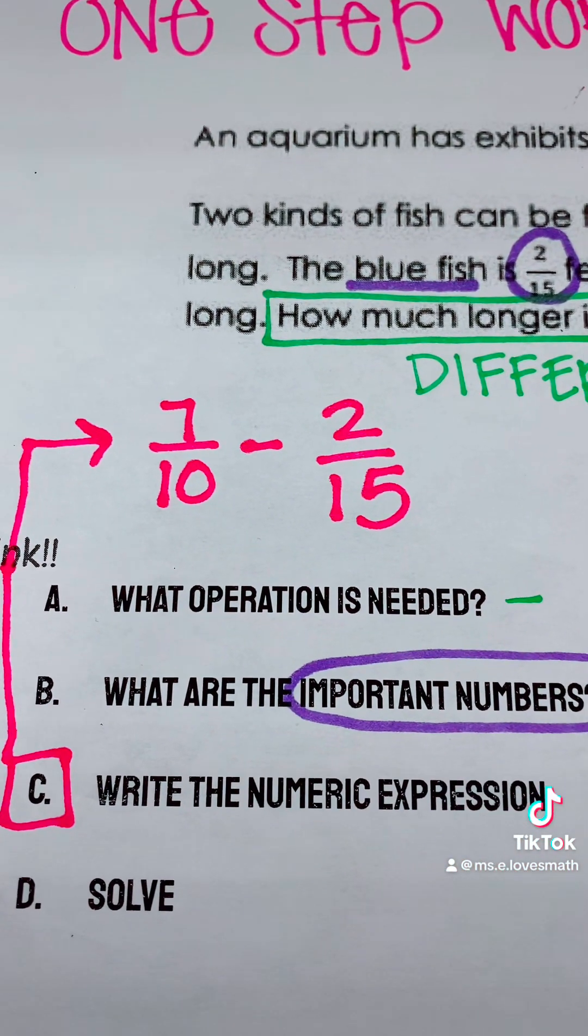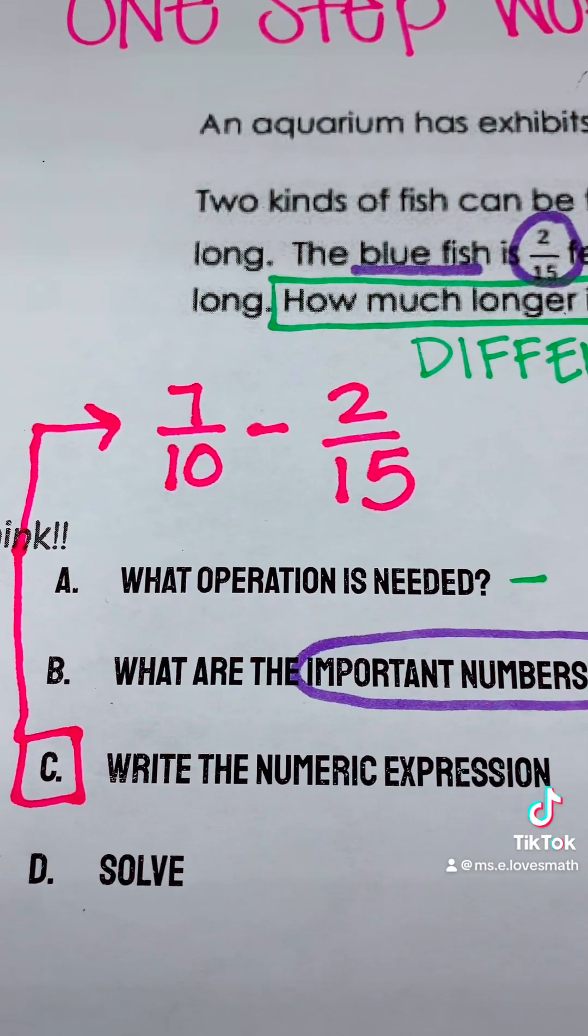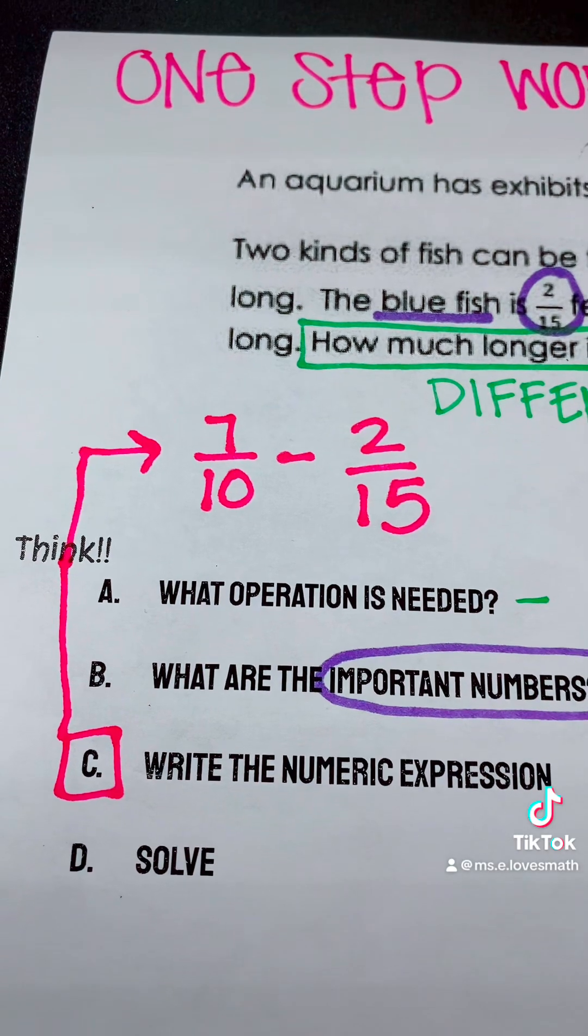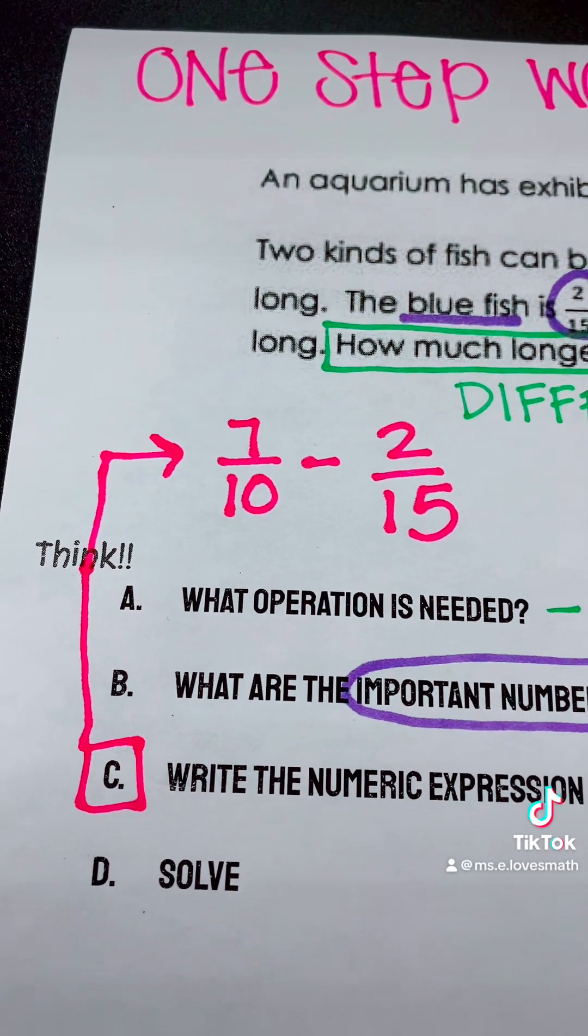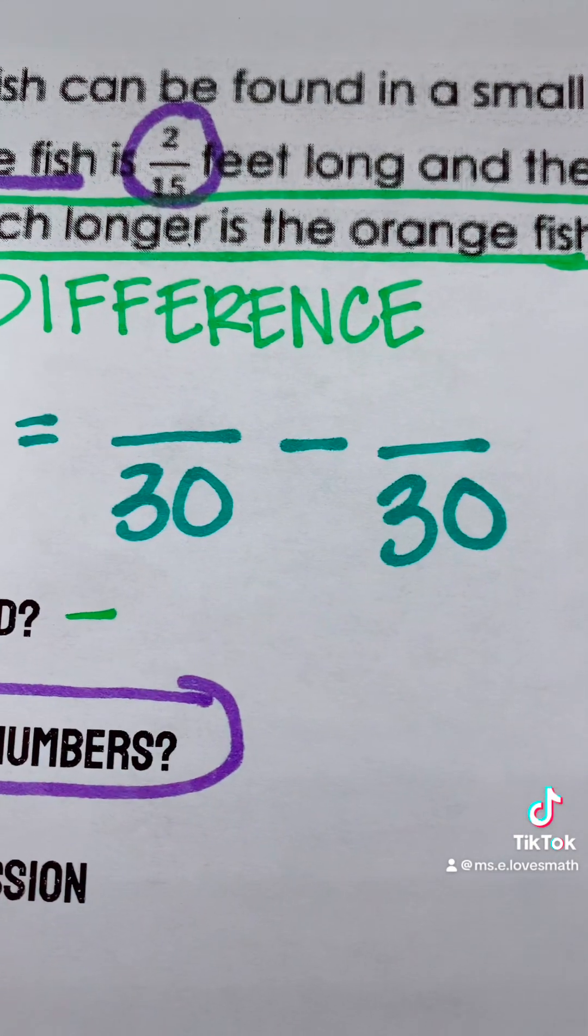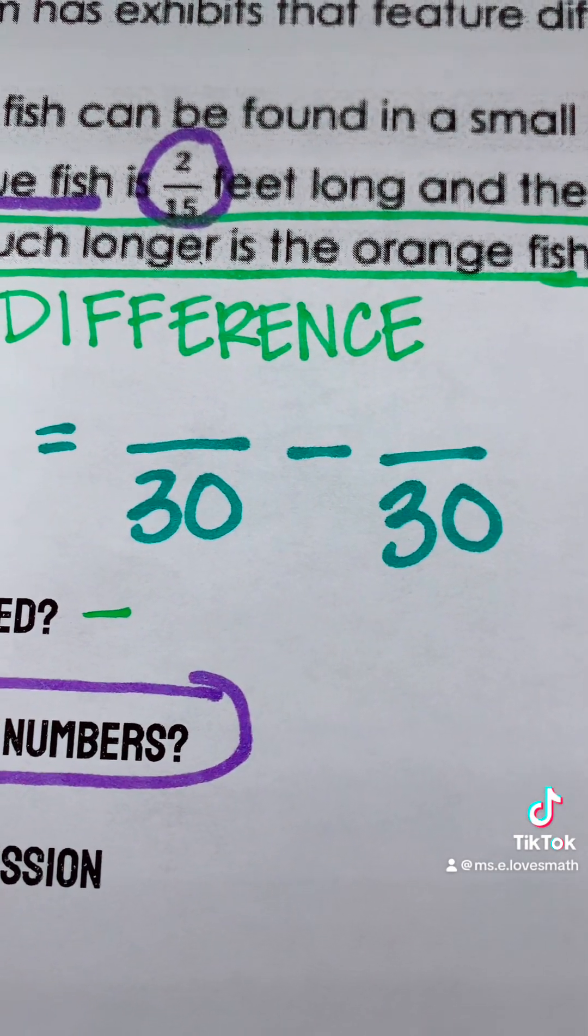Before we subtract, we do need to have a common denominator. So we need to figure out what number 10 and 15 can be turned into using multiplication. 10 and 15 can both be turned into 30, so we will do that now.